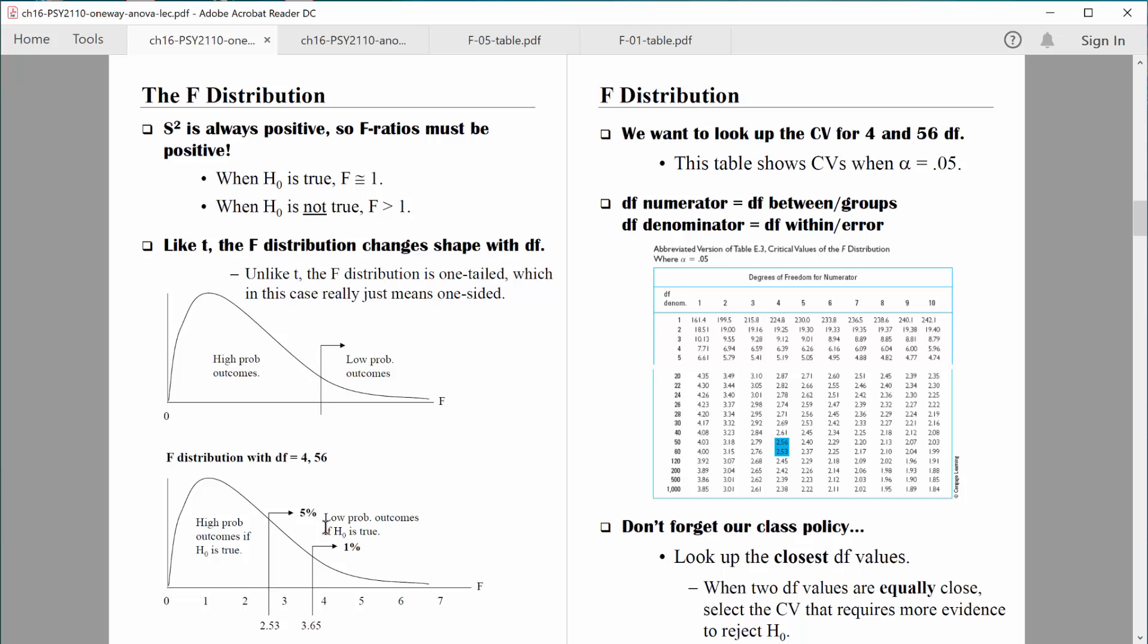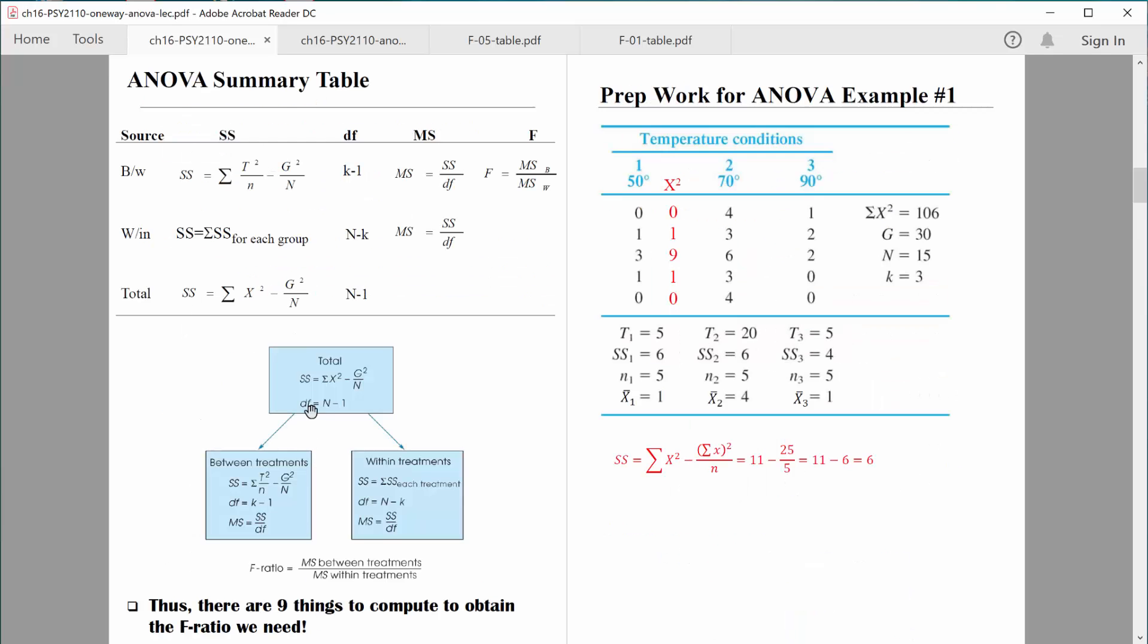So let's just assume that we're in a situation where we have 4 and 56 degrees of freedom. Let me show you where that comes from, just the way I talked about these two different degrees of freedom values. You might recall from this ANOVA source table that we compute degrees of freedom between groups based on the number of groups minus one. And we also compute degrees of freedom within groups based on the number of people overall minus the number of groups. So we have two important values for degrees of freedom. We do have degrees of freedom overall, degrees of freedom total, but in terms of finding the critical value that's not important to us.